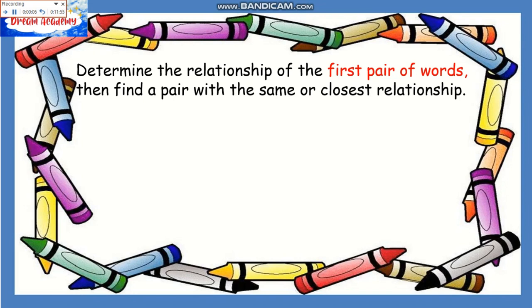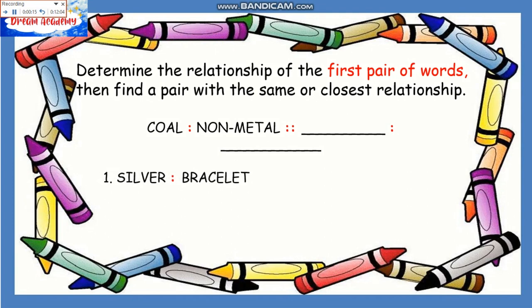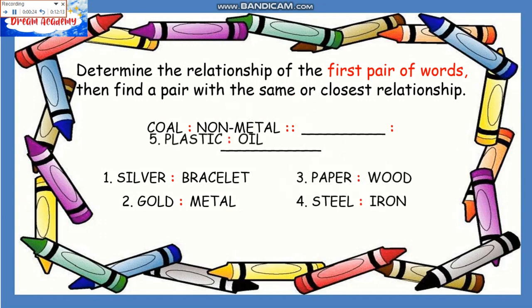Determine the relationship with the first pair of words, then find the pair with the same or closest relationship. For example: coal is to non-metal as blank is to blank. Choices: 1. Silver is to bracelet, 2. Gold is to metal, 3. Paper is to wood, 4. Steel is to iron, 5. Plastic is to oil. Coal is a kind of non-metallic mineral. Silver is not a kind of bracelet, paper is not a kind of wood, steel is not a kind of iron, plastic is not a kind of oil. This leaves only number two — gold is a kind of metallic mineral. Gold is to metal is the answer.